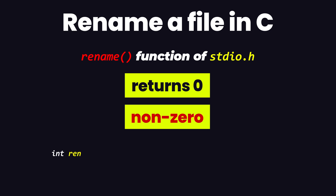The syntax of the rename function is being displayed on your screens right now. We have integer as the return type of this function, then we have the function name as rename, and then we have the parameters: first is the character pointer old name, and the second one is the character pointer new name.